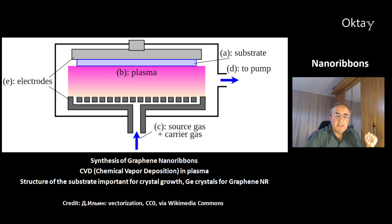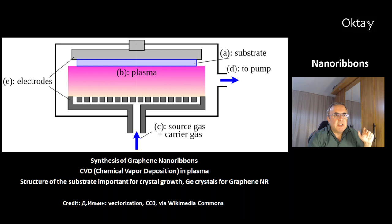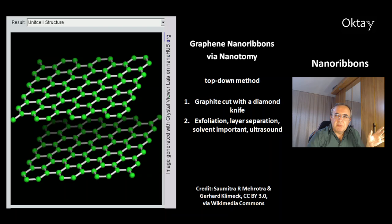This is one synthesis method for graphene nanoribbons: chemical vapor deposition (CVD) in plasma. For the structure of the nanoribbons, the substrate is very important, as is crystal growth. You have to deliver the atoms slowly to ensure growth without defects. For graphene nanoribbons, one very good substrate material is germanium crystals.